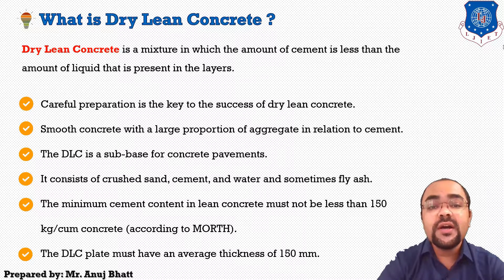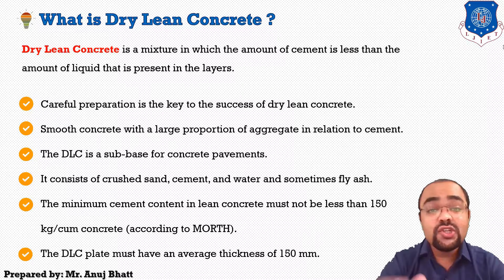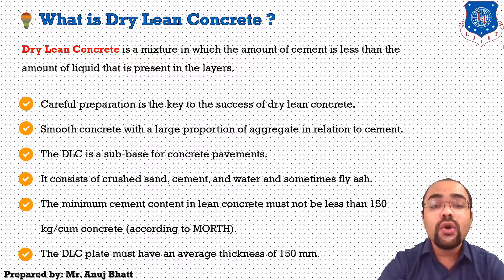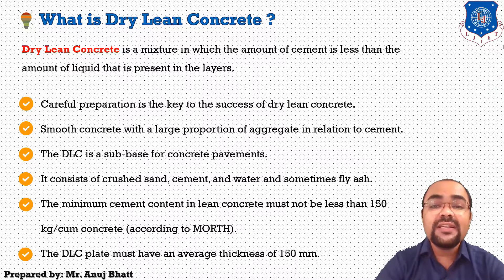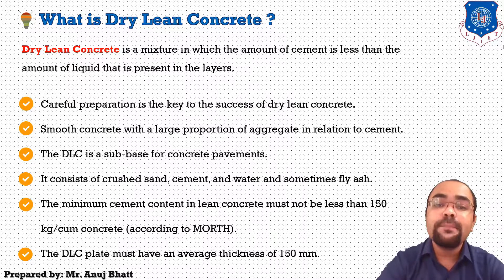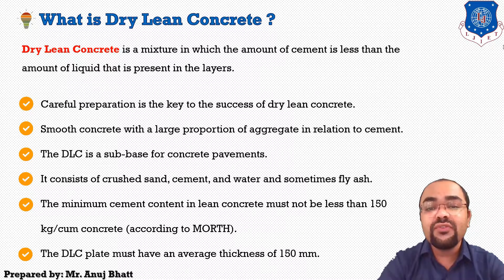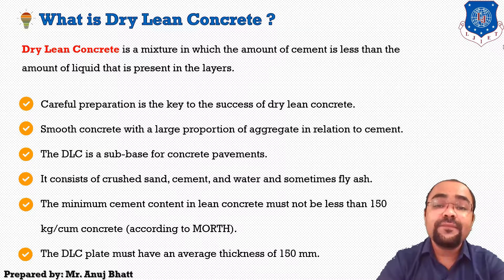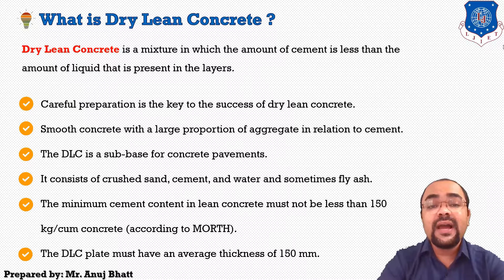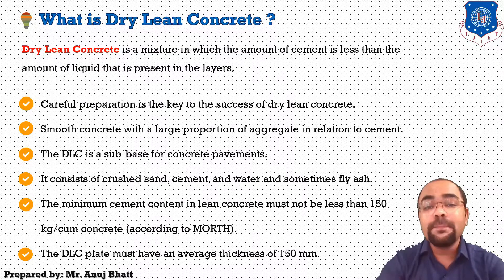Dry lean concrete bursts over time if it is not correctly applied according to the correct specification. Careful preparation is the key to success. Dry lean concrete is an important part of modern rigid pavements. It is smooth concrete with a large proportion of aggregate in relation to the cement compared to conventional concrete, and is generally used as a base layer or sub-base layer for hard paving surfaces.